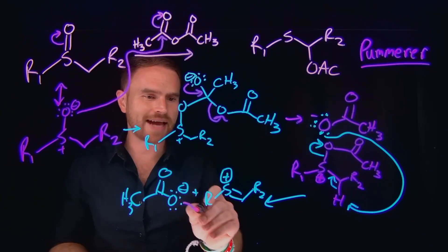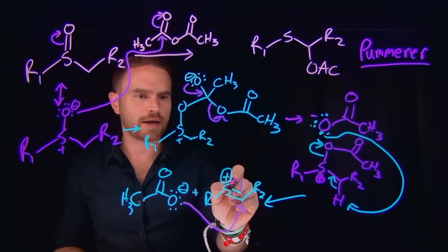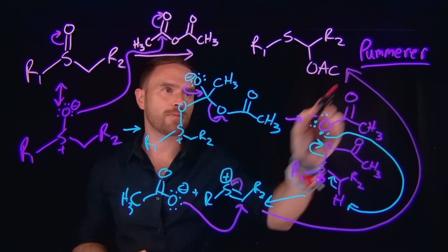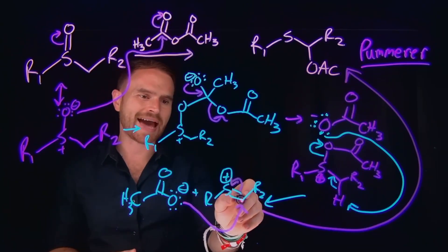What will end up happening is this acetate group can come in and attack this carbon, which will kick over the pi electrons, allowing us to make sulfur neutral and also subsequently serving to form our final product where OAc just stands for this acetate group, which will be added at this carbon position.